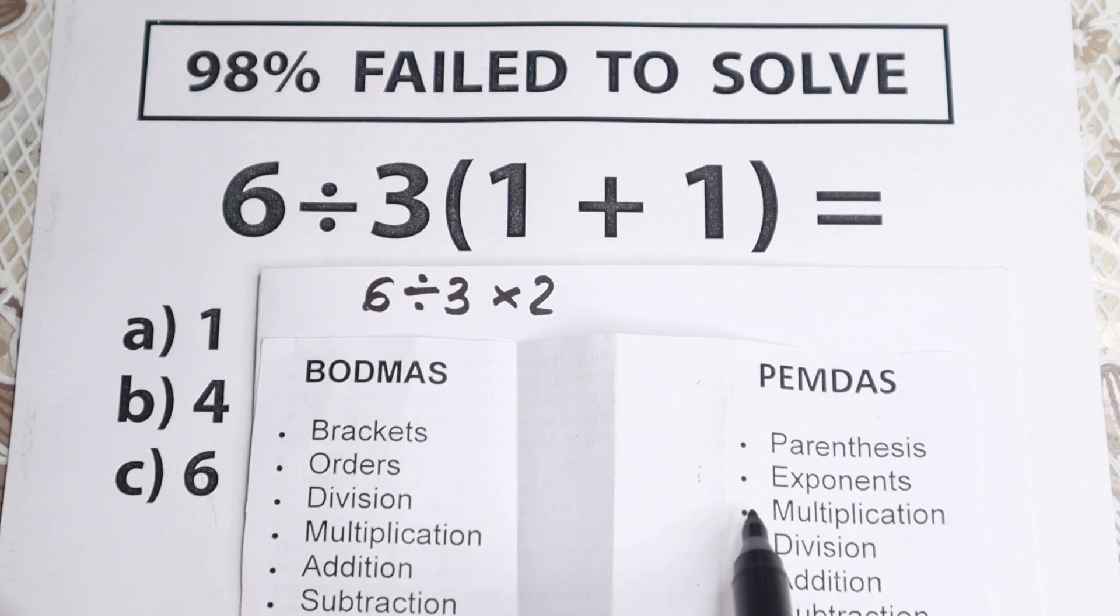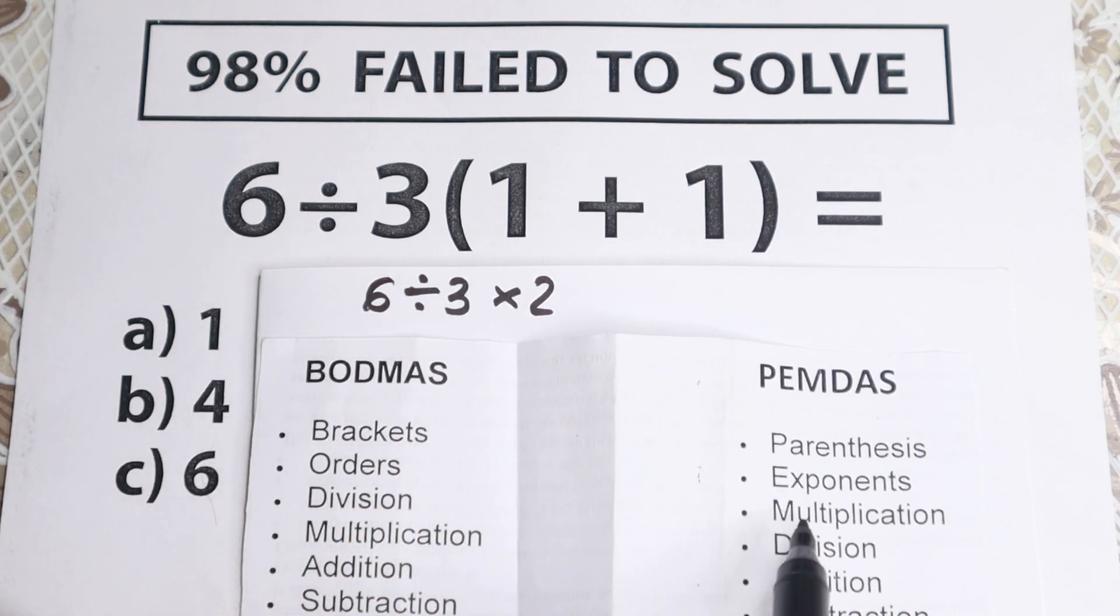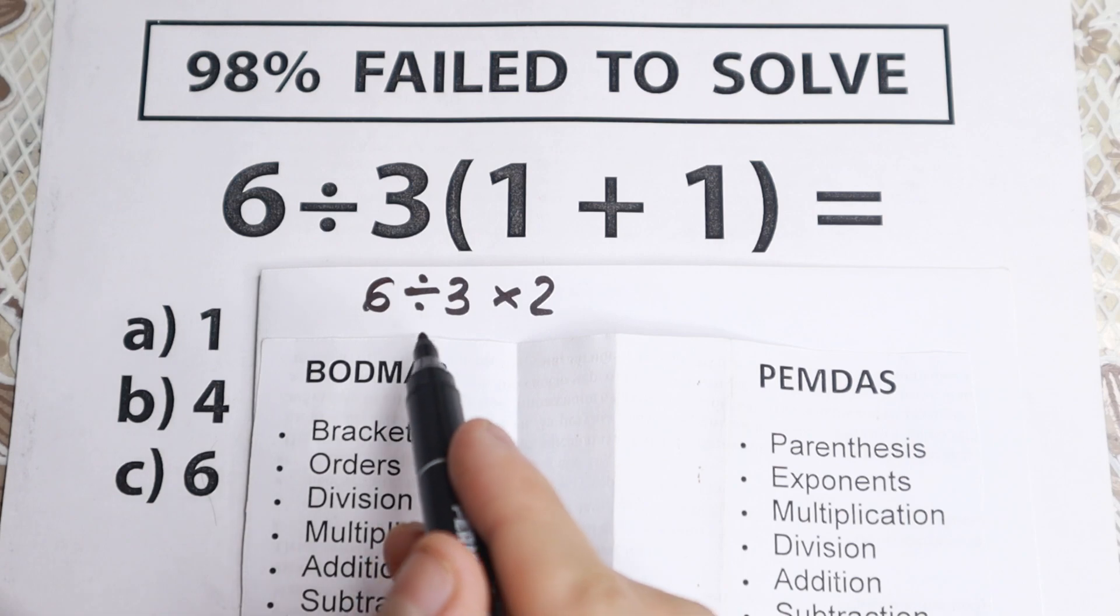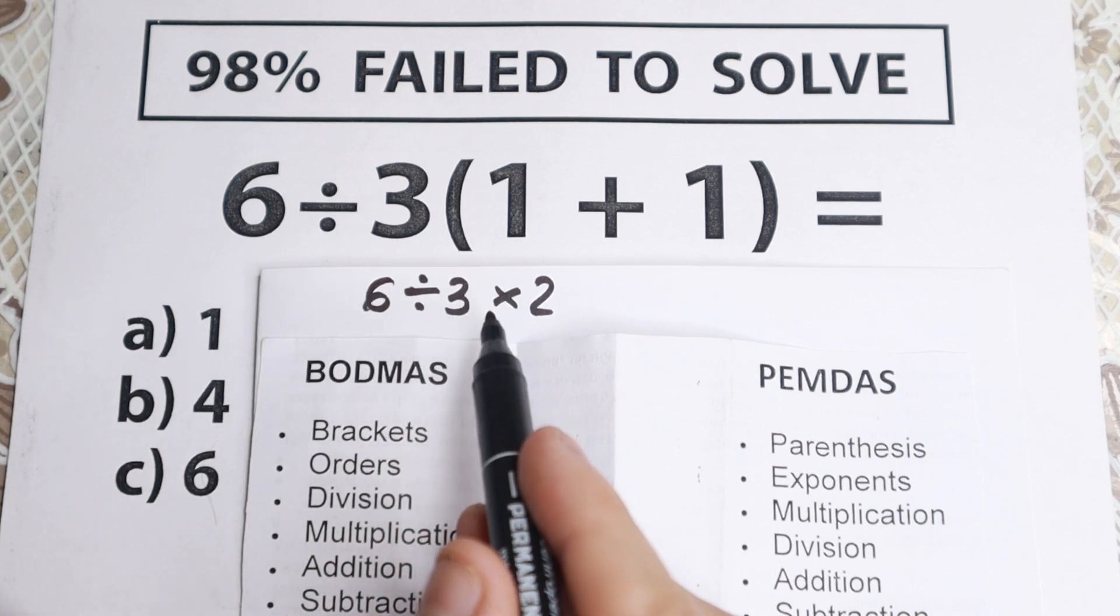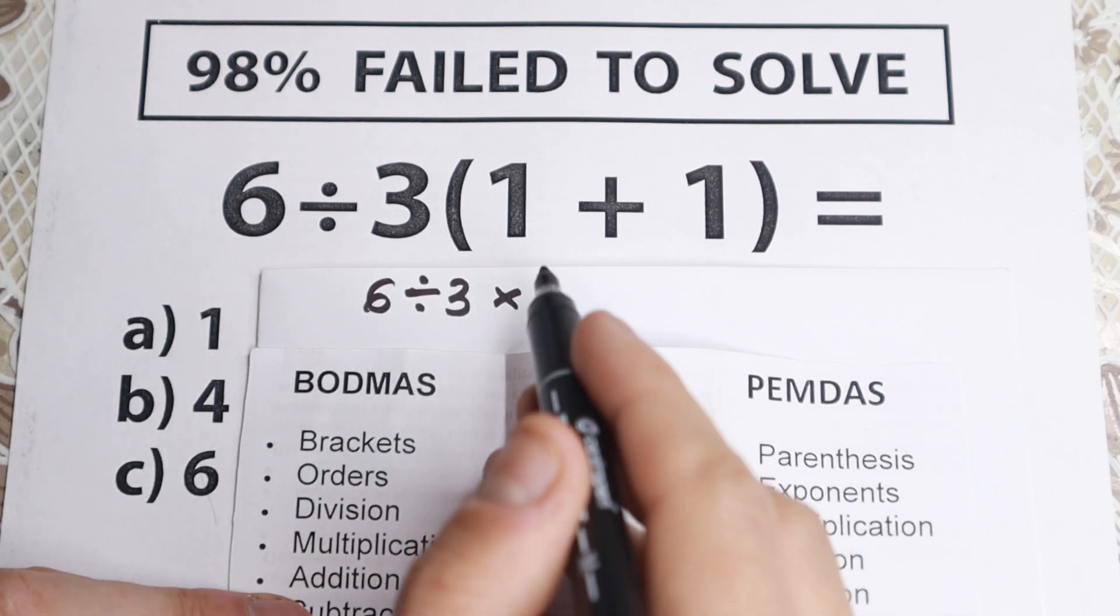In PEMDAS we work with groups. Parentheses, exponents, and then multiplication and division is one group. And addition and subtraction is the second really important group. So we need to look as a group right here. Do we have division and multiplication as one group? Yes, we have division and multiplication. So according to this method we need to go from left to right.